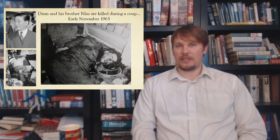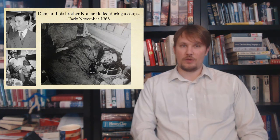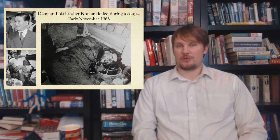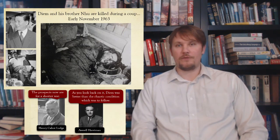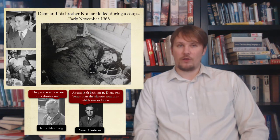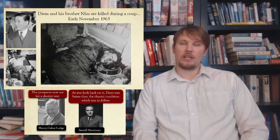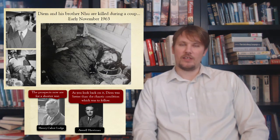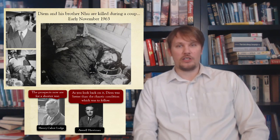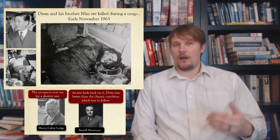America consented to a coup against Ngo Dinh Diem — they didn't plan it, they just allowed it to take place. On November 1st, 1963, South Vietnamese generals moved against Diem, and he was killed on November 2nd. Some thought this would shorten the war, saying Diem was inefficient, corrupt, and repressive. Ambassador Lodge said 'the prospects now are for a shorter war.' But others disagreed. Averell Harriman, a Washington political insider, said: 'As you look back on it, Diem was better than the chaotic condition which was to follow.' And indeed, after Diem was killed, things got worse in South Vietnam.